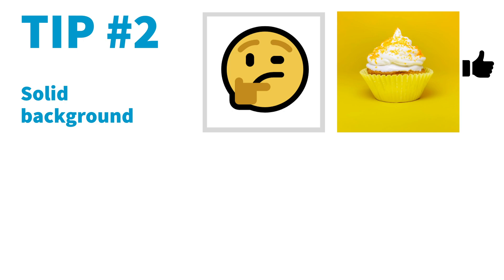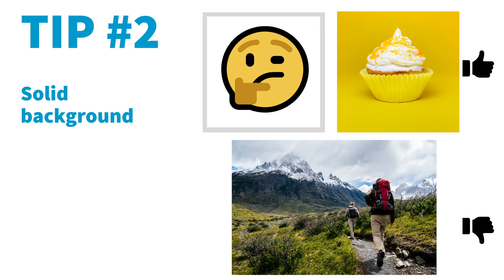Tip number two is similar: this feature works really well if the background itself is a solid color. In the emoji example, the background is just white. In the cupcake example, we don't have a nice clean line like with the emoji, but that background is pretty much a solid yellow color. The wrapper is a lighter shade of yellow than the background, so we don't actually have that great of contrast between the two, but somehow PowerPoint was able to distinguish between the wrapper and the background — and I think part of that is because the background was just one solid color.